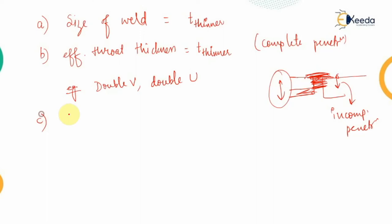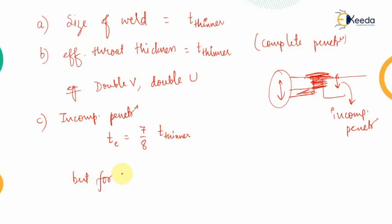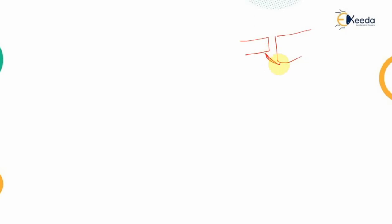In the case of incomplete penetration, the effective throat thickness TE is taken as 7/8 times the thickness of the thinner member. However, for a higher factor of safety in calculation, TE should not exceed 5/8 times the thickness of the thinner plate. If there is a difference in plate thicknesses and complete penetration is desired, the connection must be tapered at a slope of 1 in 5.